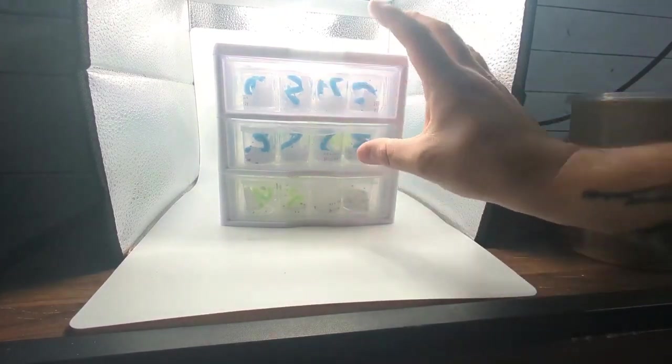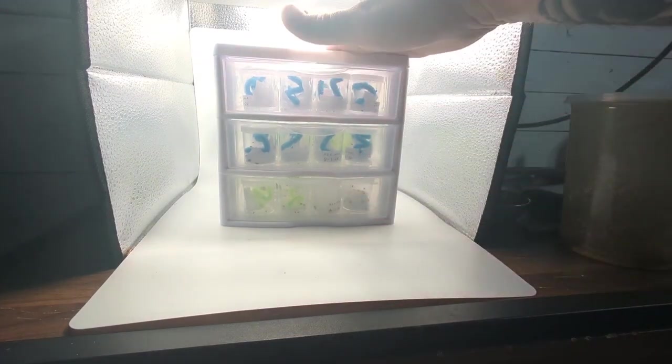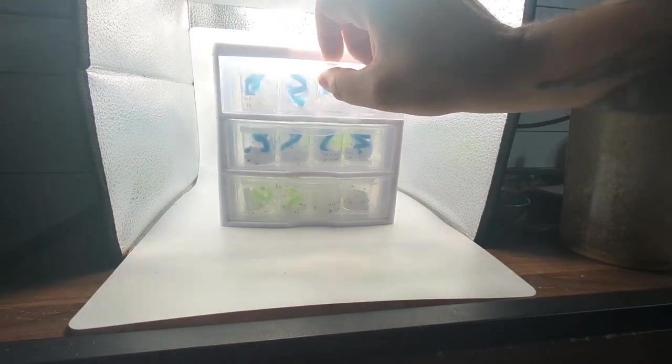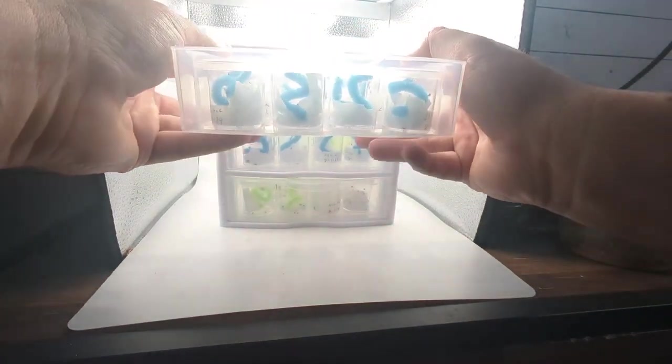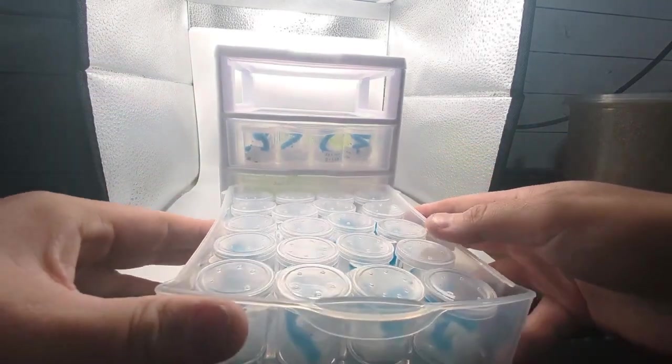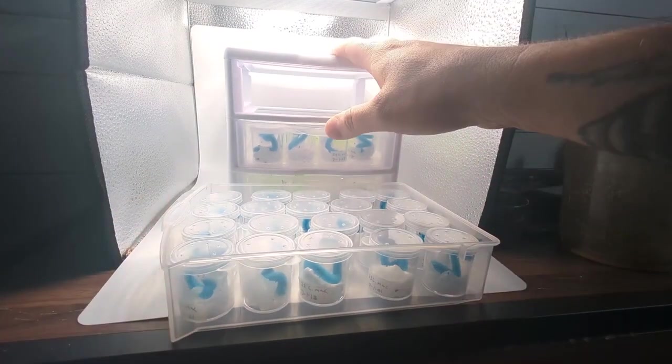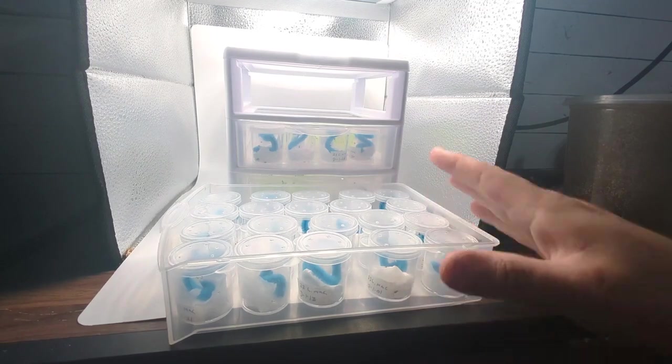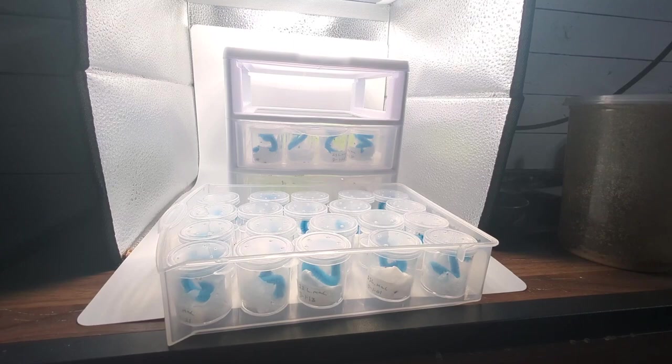For housing, I have them in just dollar store vial containers inside of Walmart Mainstays brand, the little three drawers, the smaller size. Each one of these holds about 20 little vials, so it makes it kind of easy that I can just pull a whole drawer system and feed 60 slings pretty quickly, and then go grab the next one and just go through it like that.